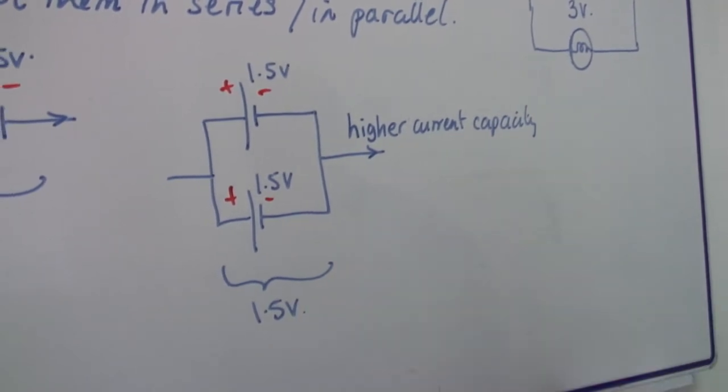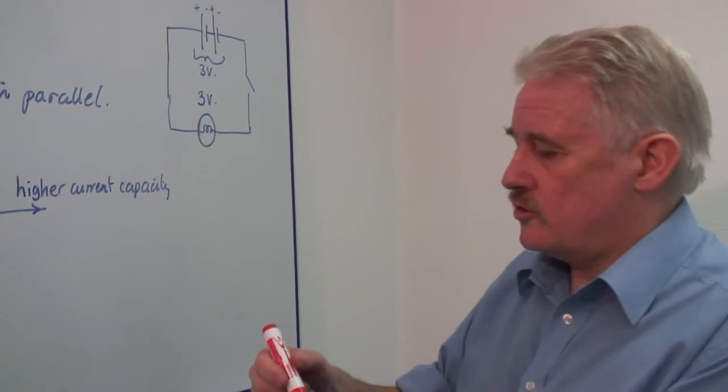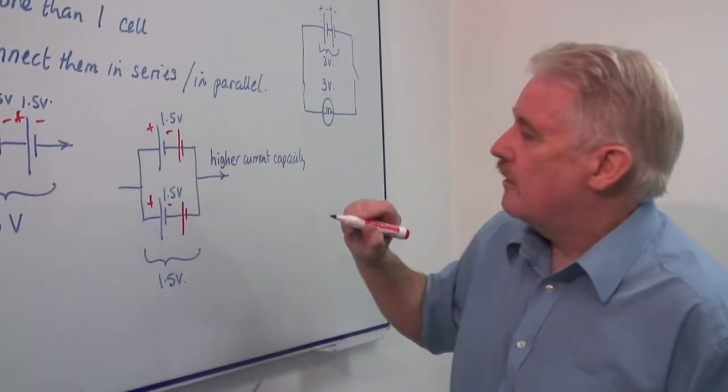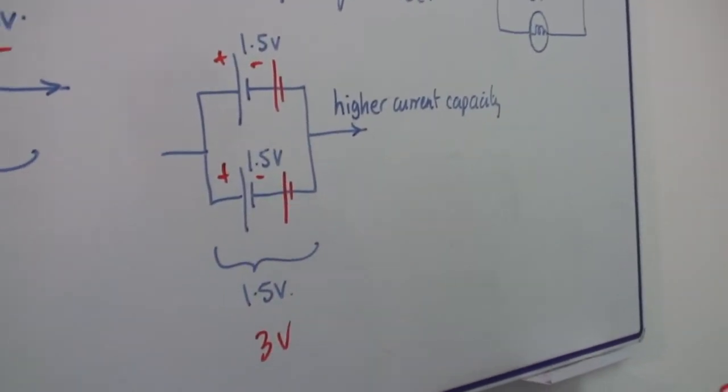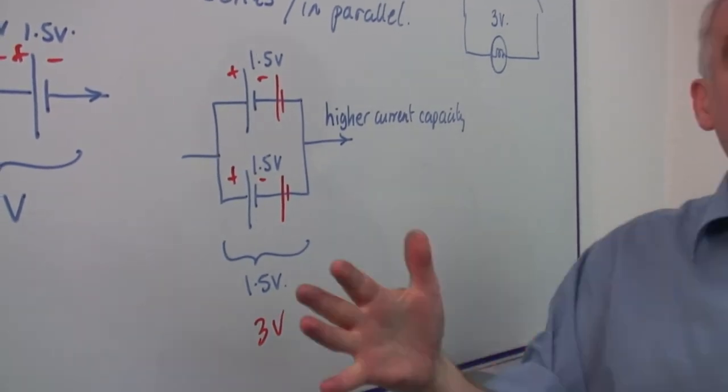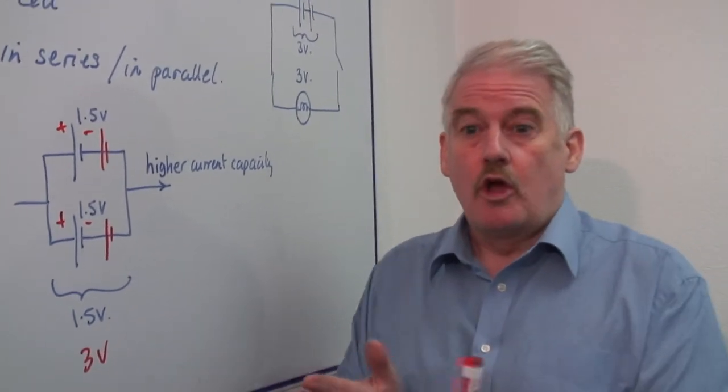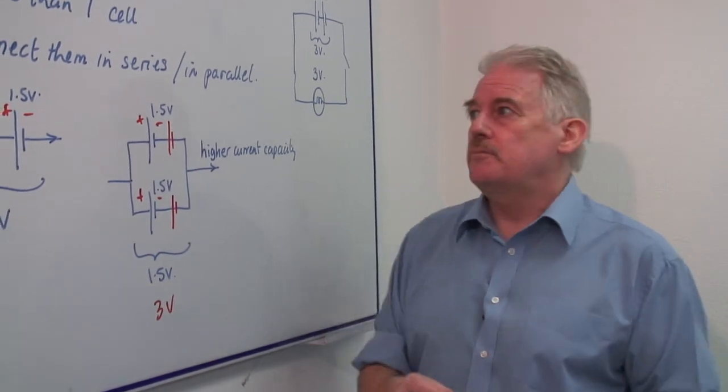We could always, of course, put another cell in here and one in here, and we could increase that to create a 3 volt battery with a higher current capacity. So by putting cells together in parallel or in series, we can increase the voltage and we can increase the current capacity.